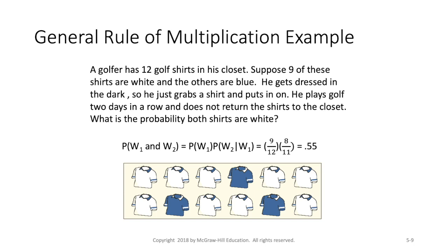And so we want to find the probability that both shirts that the golfer wears for day one and day two are both white shirts. So to do this, first we calculate the probability that his shirt on day one is white. And so that's this nine over 12 here.